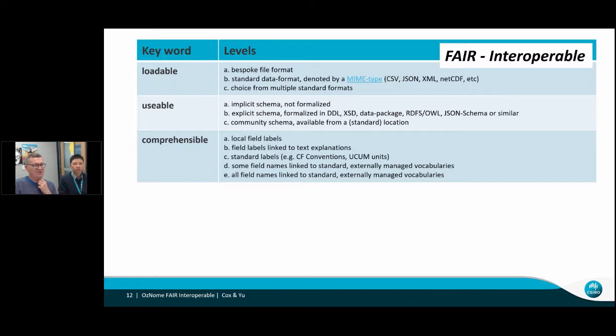Even when you've got it loaded and you understand what the structures are, you've still got the question about what the words and numbers are inside the boxes. Do the column headings, are they explicit enough to understand? Are they just shorthand for something which the project leader knew they would understand the next week, but if they came back to it the next year may not understand? Best, of course, is if the field labels are linked and do have explanations, probably in plain text. Better still is to use standard labels. For example, the Universal Code for Units of Measure, UCUM codes, or the Climate and Forecast conventions coming out of the fluid earth community. So the ladder we've got here says, are you using standard labels? Are some of the field names linked to standard externally managed vocabularies? Are all the field names linked to standard externally managed vocabularies? You get this ladder better and better and better.